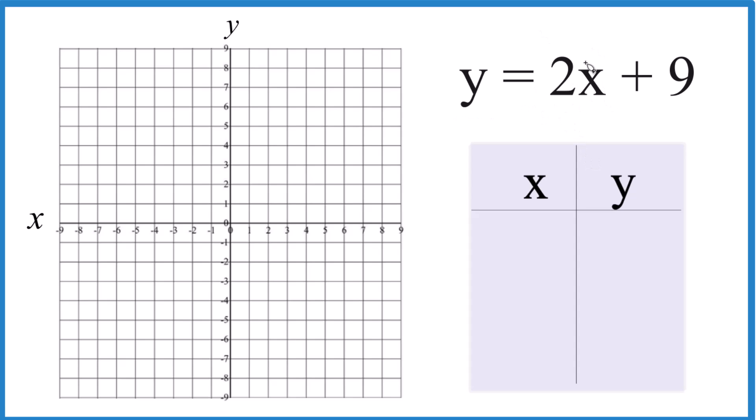So we'll put values in for x here on this side, and then find y, and then graph those points. I like to start out with 0 for x. You can choose any numbers, but 0 is a good number because 2 times 0 is 0, and 0 plus 9, that's just 9. I could choose 1,